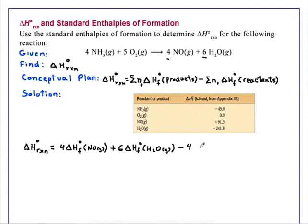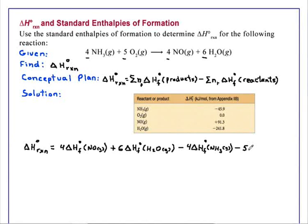From this we subtract 4 times — because of the coefficient of 4 in front of the ammonia, and we're subtracting because of the negative in the equation — 4 times the standard enthalpy of formation of gaseous ammonia. We also subtract 5 times the standard enthalpy of formation of gaseous diatomic oxygen, which we know is zero but include just to be complete.